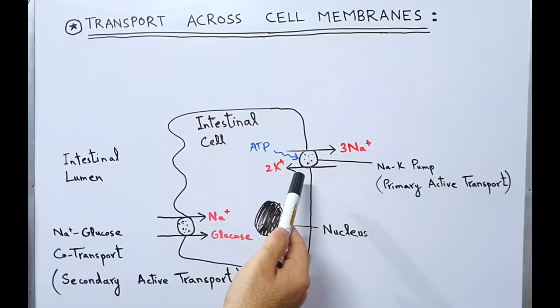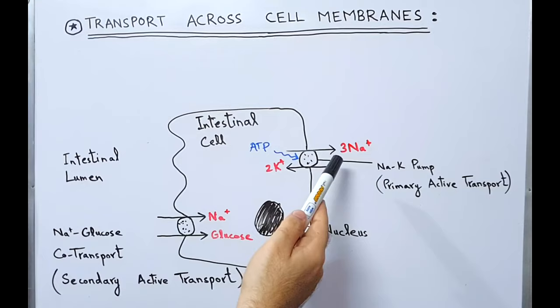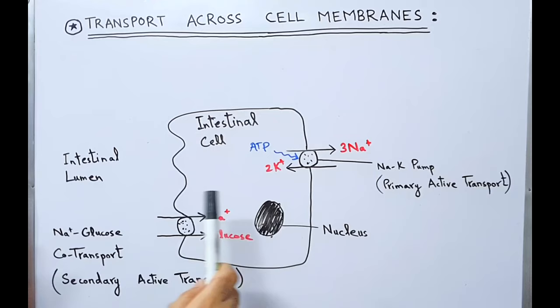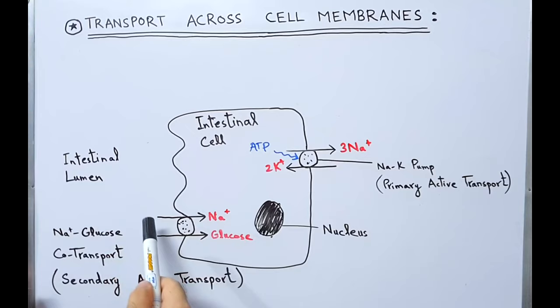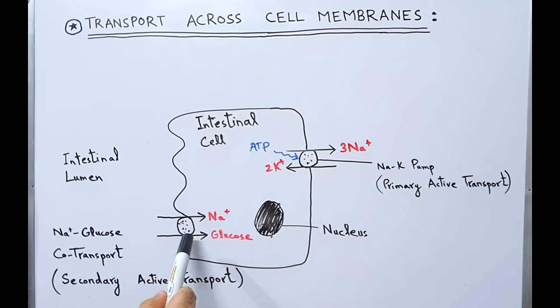For example, drugs like digitalis block the sodium-potassium ATPase pump. When they block this pump, the sodium-glucose co-transport is also blocked, because the concentration gradient of sodium is not maintained. If the sodium concentration gradient is not maintained, the co-transport cannot happen. This illustrates why it is called secondary active transport — the co-transport or counter transport is secondary to primary active transport; it does not use ATP directly but depends on the primary active transport.